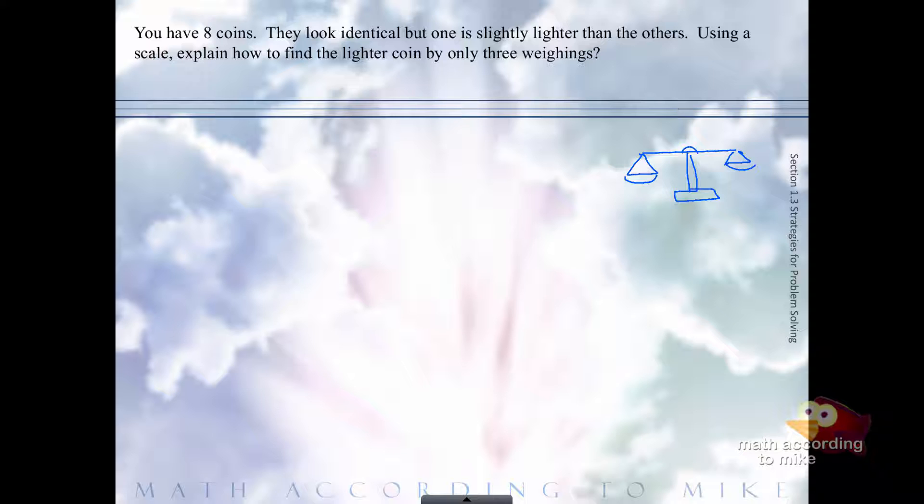All right, so to figure this one out, you have eight coins, one is slightly lighter than the others. All the other seven are fine. So to identify the lighter coin, what you do is you break it up into four and four.